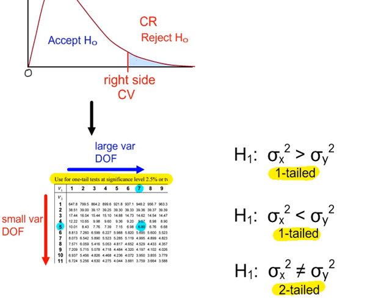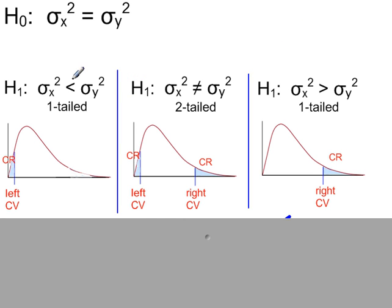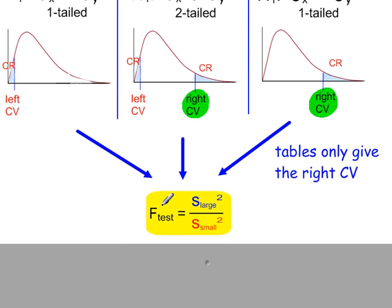The reason for just working with the right side is as follows. You might expect that when H1 is less than, the critical region is on the left; when H1 is not equal to, you have two critical regions; and when H1 is greater than, the critical region is on the right. The problem is that the F distribution tables in the formula book only give right-hand side critical values, not left-side values. By calculating the test statistic as the large value divided by the small value, this enables us to only work with the right-side critical values.